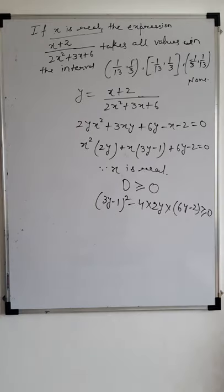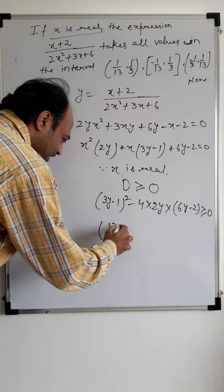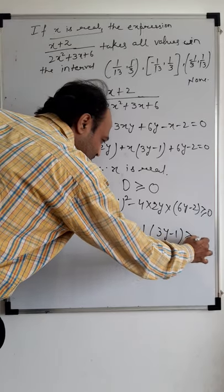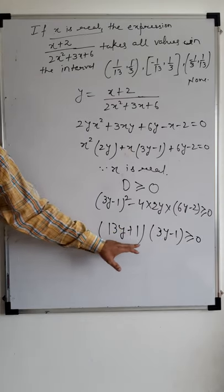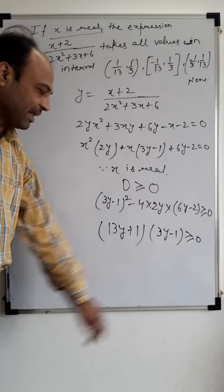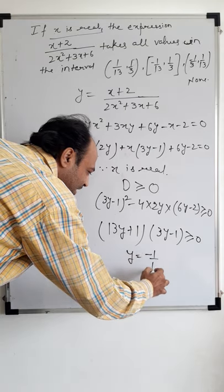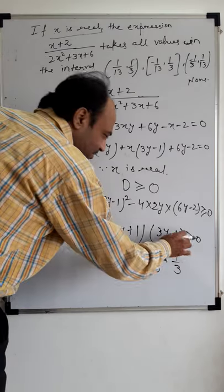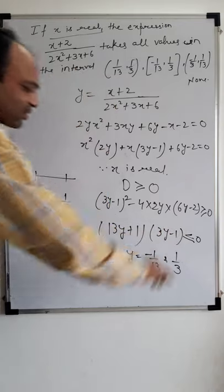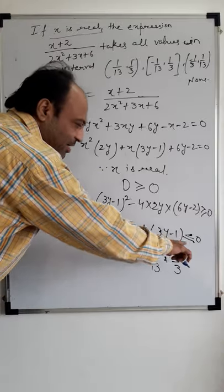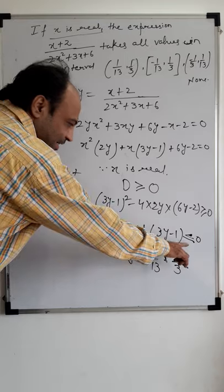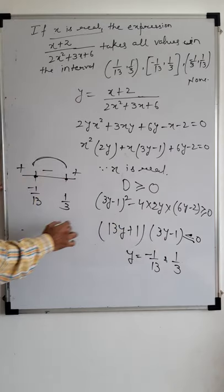We now have an inequality. After simplifying all steps — expanding (3y-1)² and subtracting 4·(2y)·(6y-2) — we arrive at (13y+1)(3y-1) ≥ 0. Wait, once you simplify there is a minus sign involved when multiplying, so the inequality flips, giving (13y+1)(3y-1) ≤ 0. The roots are y = -1/13 and y = 1/3. Plotting these on a wavy curve: minus, then plus, then minus — so the inequality ≤ 0 holds between the roots.